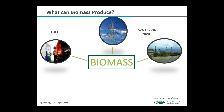Biomass power, or biopower, technologies convert renewable biomass fuels into heat and electricity using processes similar to those used with fossil fuels. Next to hydropower, more electricity is generated from biomass than any other renewable energy resource in the United States. A key attribute of biomass is its availability upon demand — the energy is stored within the biomass until it is needed, whereas other forms of renewable energy depend on variable conditions such as wind speed or sunlight intensity. Technologies that generate electricity from biomass are scalable from a single farm or remote village to providing power for a small city.